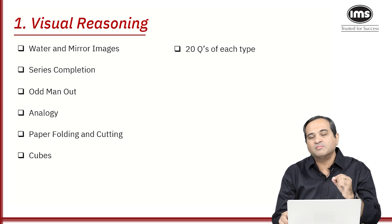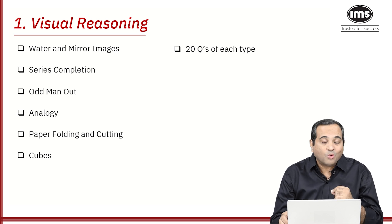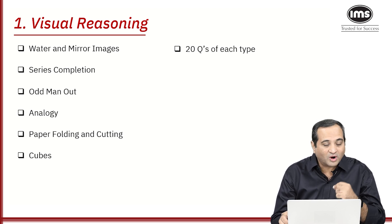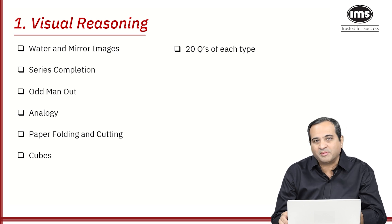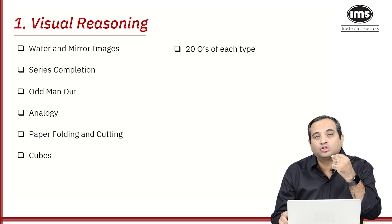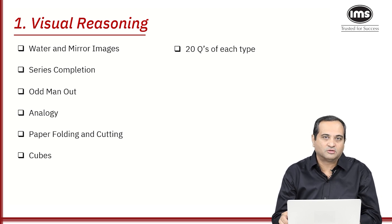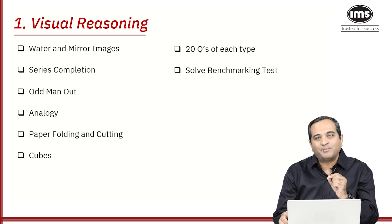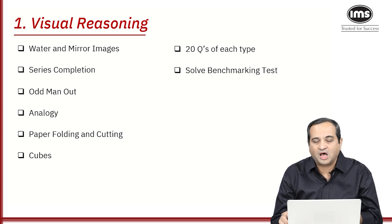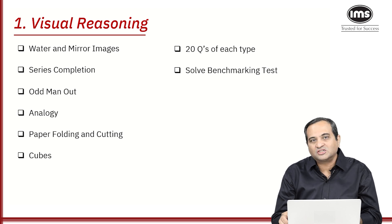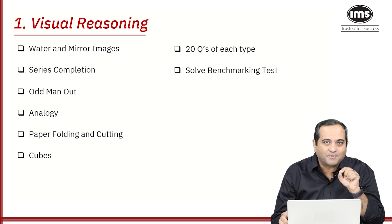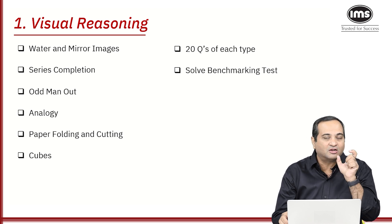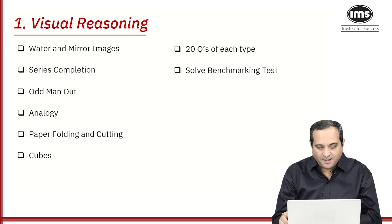If you solve a minimum of 20 questions of each type, you will encounter various types of questions — for example, all the different types that appear in odd man out. Once you are done with that, solve the benchmarking tests. If you solve the benchmarking test, you will get confidence in that particular area because the benchmarking tests are designed topic-wise.